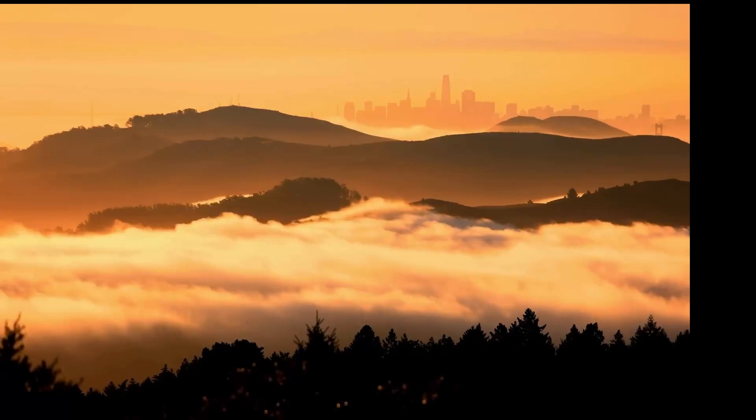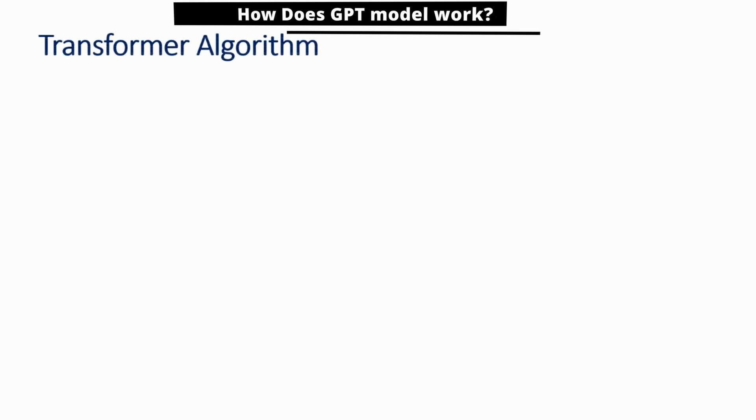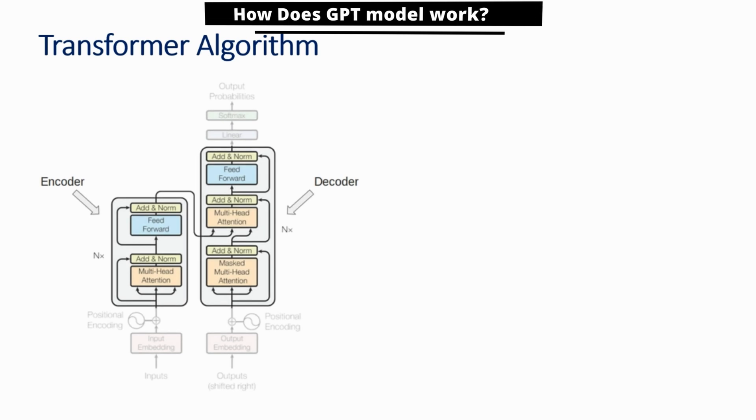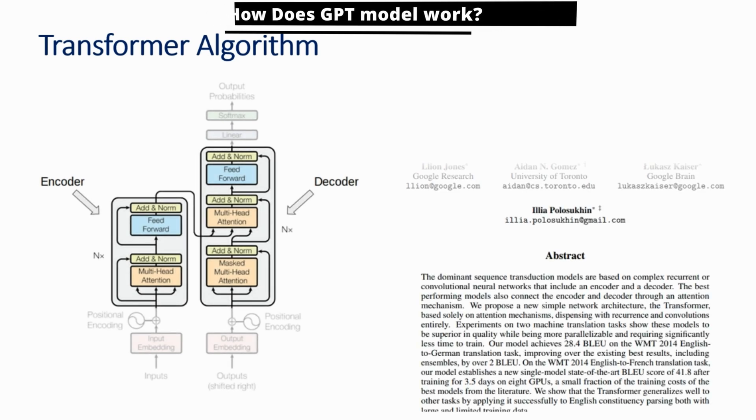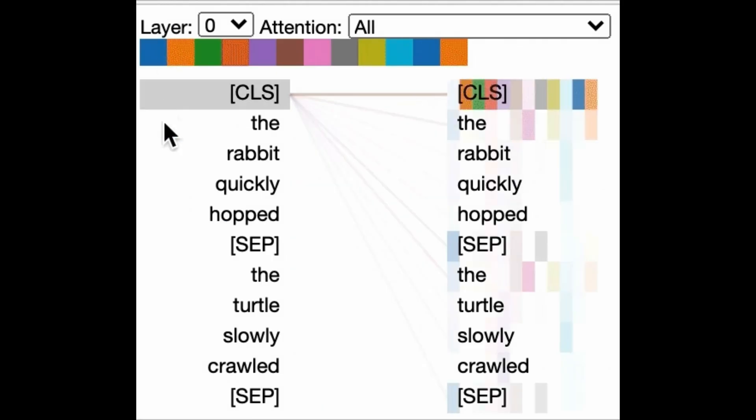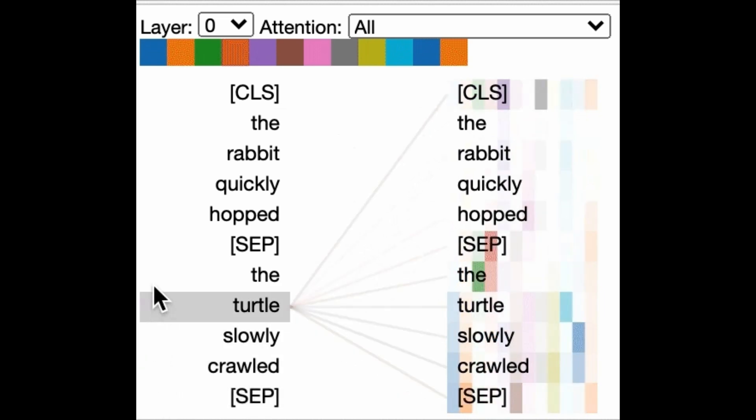At the core of GPT is an algorithm based on a deep neural network architecture called the Transformer. The Transformer was introduced in a paper by Google researchers titled, Attention is all you need. The key idea behind the Transformer is something called self-attention.